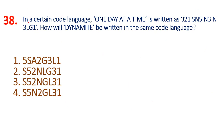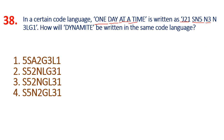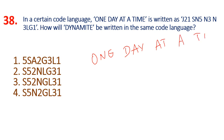Question 38: In a certain code language, 'one day at a time' is written as J21SN5N3N3LG1. Find the code for 'dynamite'. The coding involves mapping letters with numbers. Let's decode: D maps to a code, Y maps to 5, N maps to 2, A maps to a value, M maps to N. The code is J21SN5N3N3LG1 format.